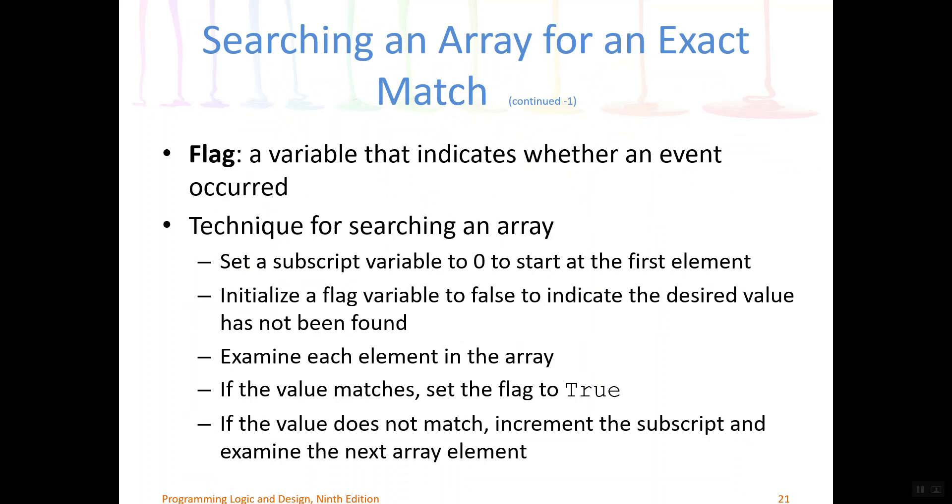After the loop, we'll be able to look at the flag to determine whether a match was ever found. If the flag had been set to true or Y for yes, then we know that there was a match found. If it had never been updated, then we were not able to find a match, and the item number was not in the list of valid item numbers. So we would tell the customer, sorry, that's not a valid item number.